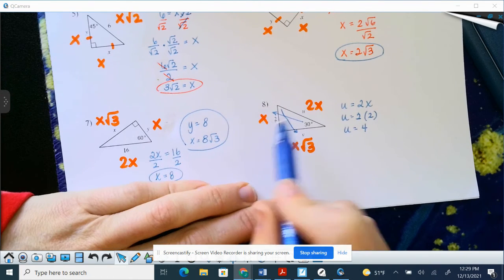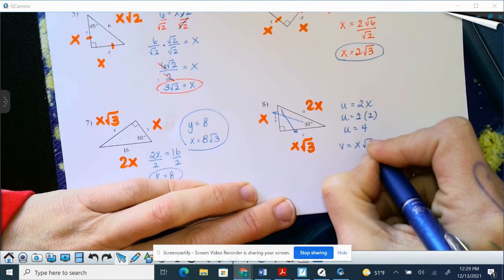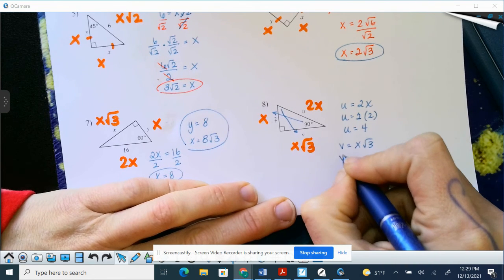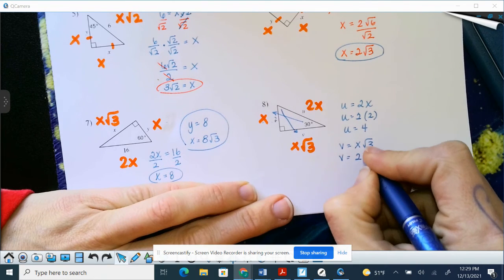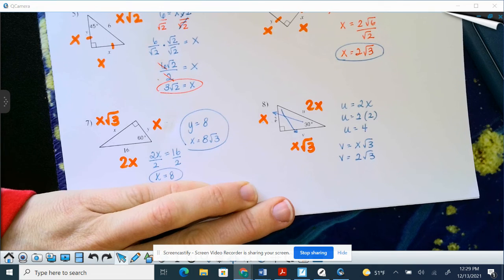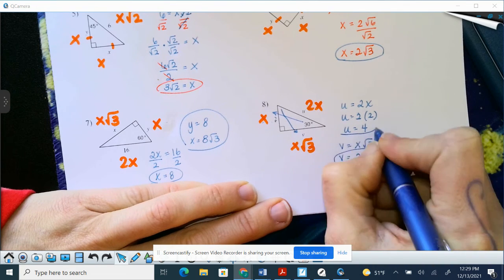Again, if we know that X is 2, then V at this point is X square root of 3. So we're going to plug in 2 for X because we know 2 is X. Square root of 3, and that can't be reduced in any form or fashion. So V is 2 square root of 3, and U equals 4.